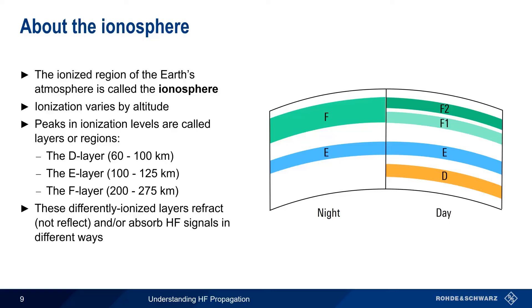It's important to note that the ionosphere does not reflect signals, but rather refracts signals. The different electron densities at different altitudes is what makes this refraction possible.